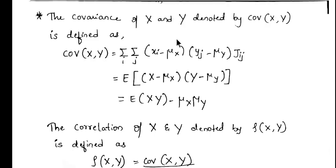Good morning everyone. In the previous lecture we studied some definitions of the joint probability distribution. The first definition we learned is joint probability, next marginal distribution, next expectation, next variance and standard deviation.